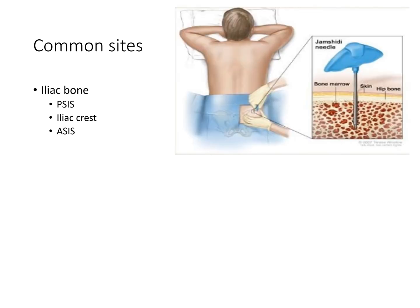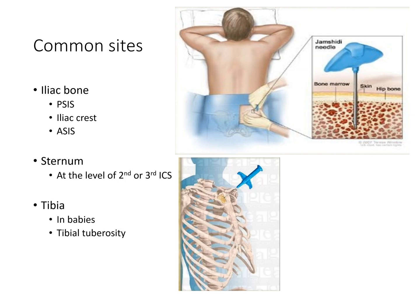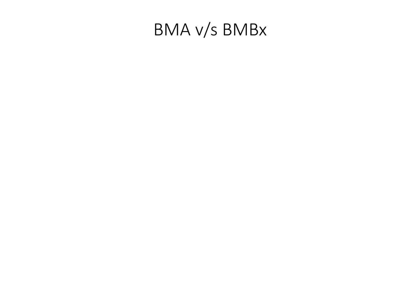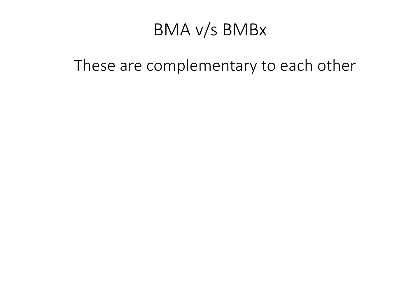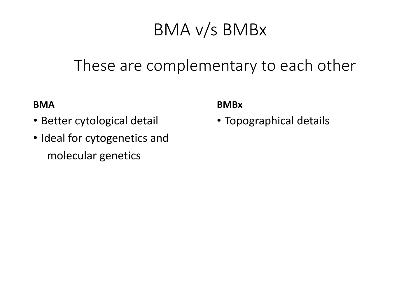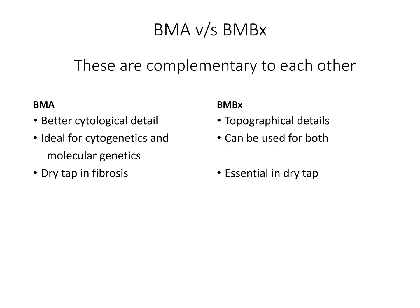In the iliac bone, the posterior superior iliac spine is the most common site for bone marrow aspiration and biopsy. The iliac crest and anterior superior iliac spine are generally used for bone marrow aspiration. The sternum is used only for aspiration. The tibia is used in babies because other bones are not well formed, and the tibial tuberosity is the most common site. Bone marrow aspiration gives better cytological detail, whereas bone marrow biopsy gives better histological detail. Bone marrow aspirate is a good test for cytogenetics and molecular genetics, whereas biopsy can be used for the same but is not ideal. In fibrosis, bone marrow aspirate generally gives a dry tap, whereas bone marrow biopsy becomes essential in that case.